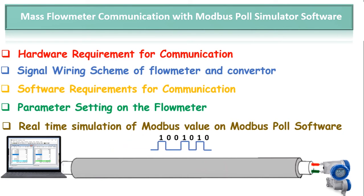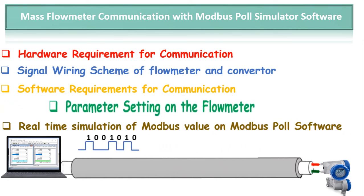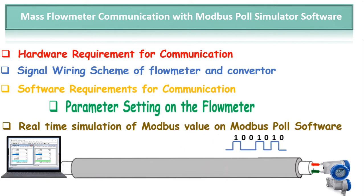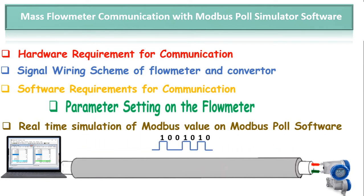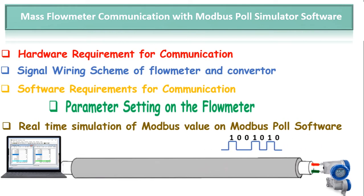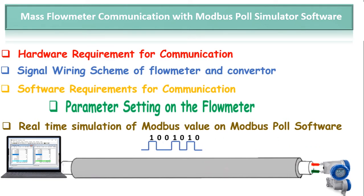In today's video we will see the Modbus RS485 parameter setting on the flow meter side. If you want to change the basic RS485 parameters of the flow meter according to your existing RS485 network, then this parameter setting learning is very important for you. Or if you do not know the exact RS485 parameters of the flow meter, you can check them by the method we will learn today.